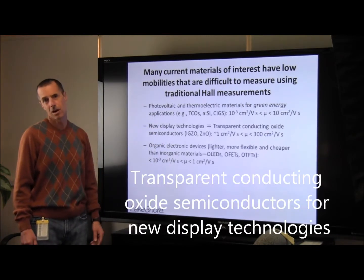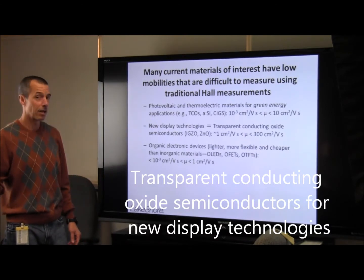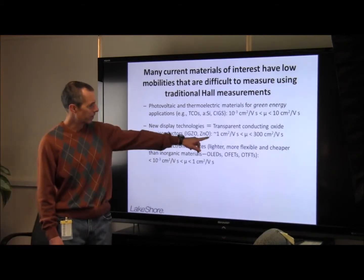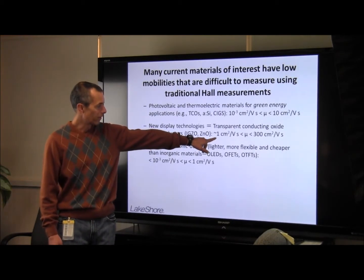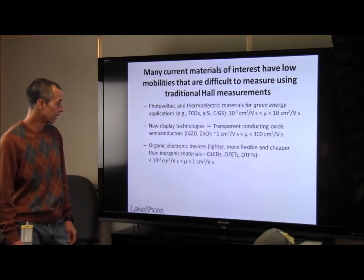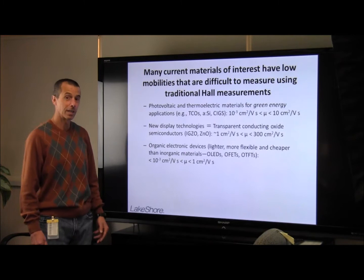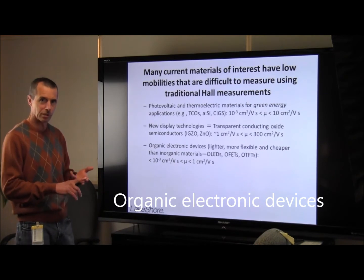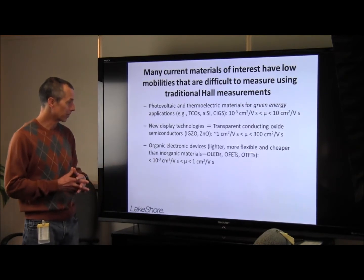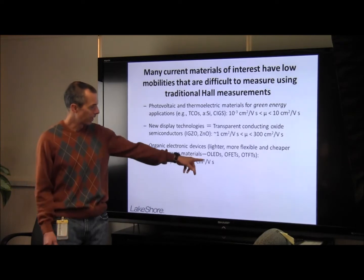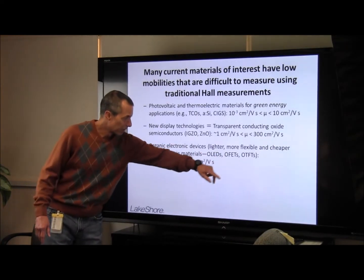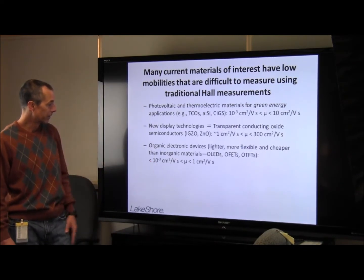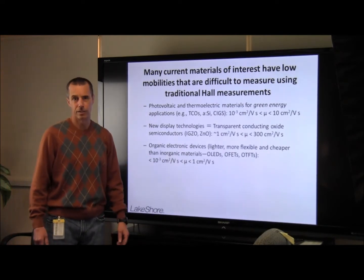Materials for new display technologies are typically transparent conducting oxide materials — for example, indium gallium zinc oxide and zinc oxide — which have mobilities on the low end on the order of about 1, up to a few hundred on the high end. Lastly, there is the emerging class of organic electronic materials that are of interest because they're lighter, more flexible, and cheaper to produce than conventional inorganic materials. These include organic LEDs, organic FETs, and organic thin film transistors, which typically have very low mobilities ranging from less than 10 to the minus 3 on the low end, up to about 1 on the high end.